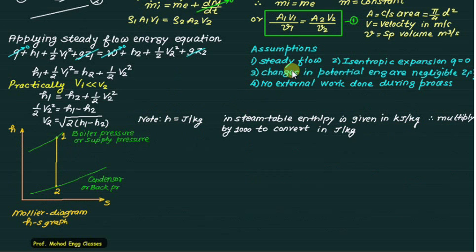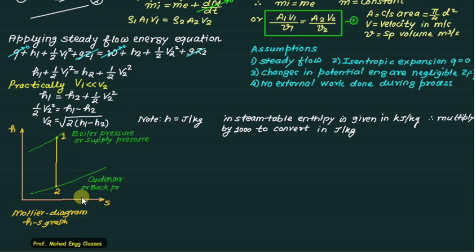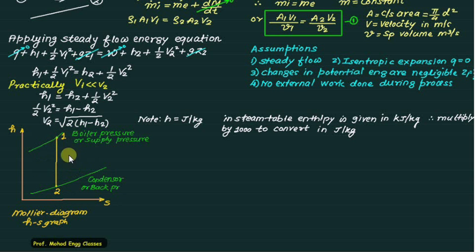Isentropic expansion means: before the nozzle we have a boiler supplying pressure, and after the steam turbine we have a condenser developing back pressure. Expansion takes place from state 1 to state 2. On the Mollier diagram, enthalpy versus entropy, the isentropic expansion process follows a vertical line so entropy is constant and h1 minus h2 is the isentropic enthalpy drop.